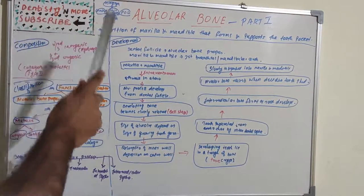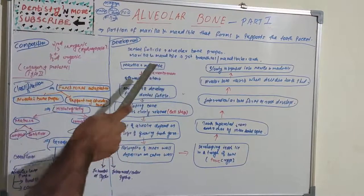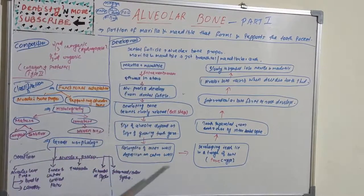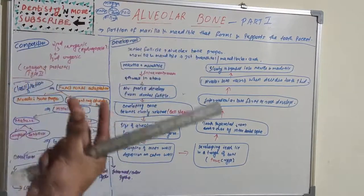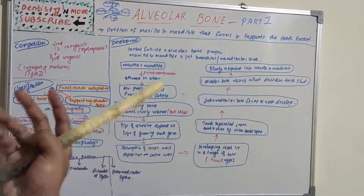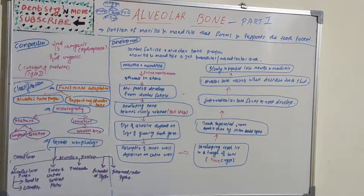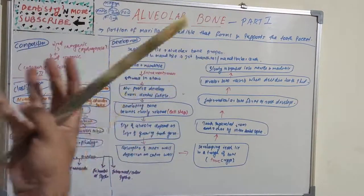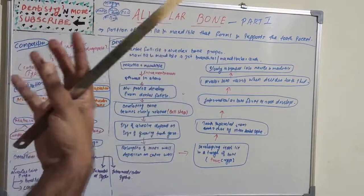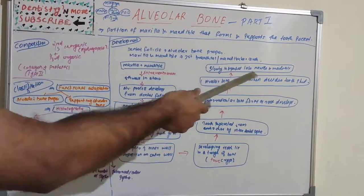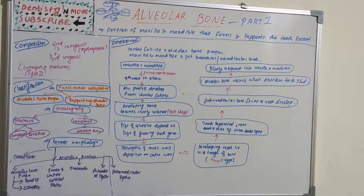To summarize development: the maxilla and mandible form through intramembranous ossification; at the 8th week in utero the alveolar process develops from the dental follicle; in bell stage it becomes closely related and depends on tooth germ size; resorption happens at the inner wall and deposition on the outer wall; teeth lie in a tooth crypt and are separated by interdental septa and interradicular bone. Deciduous tooth alveolar bone resorbs automatically, and the process is slowly incorporated into the body of the maxilla and mandible.